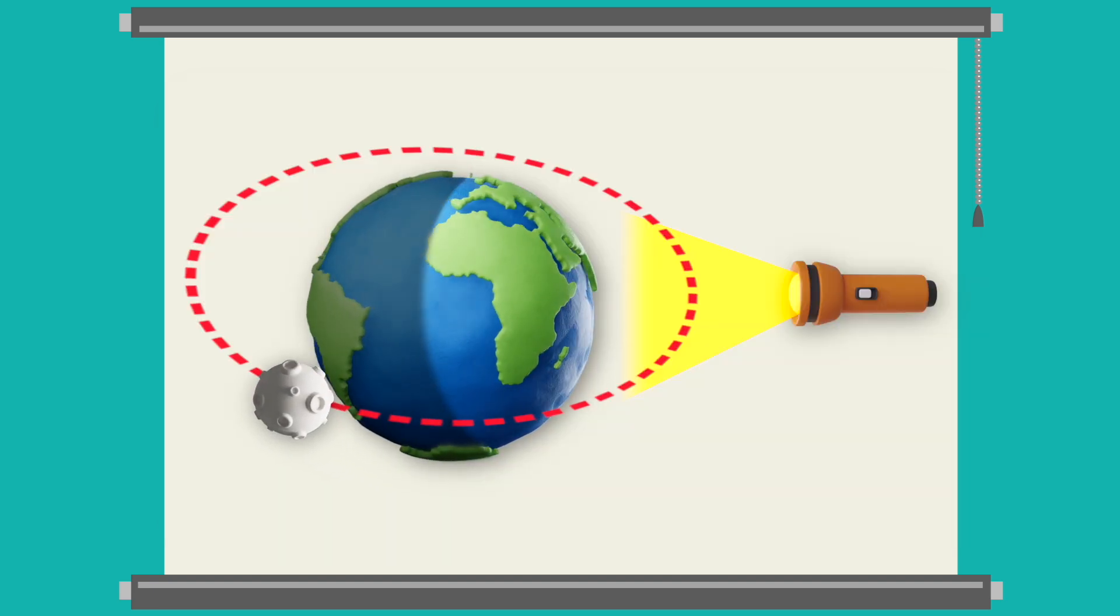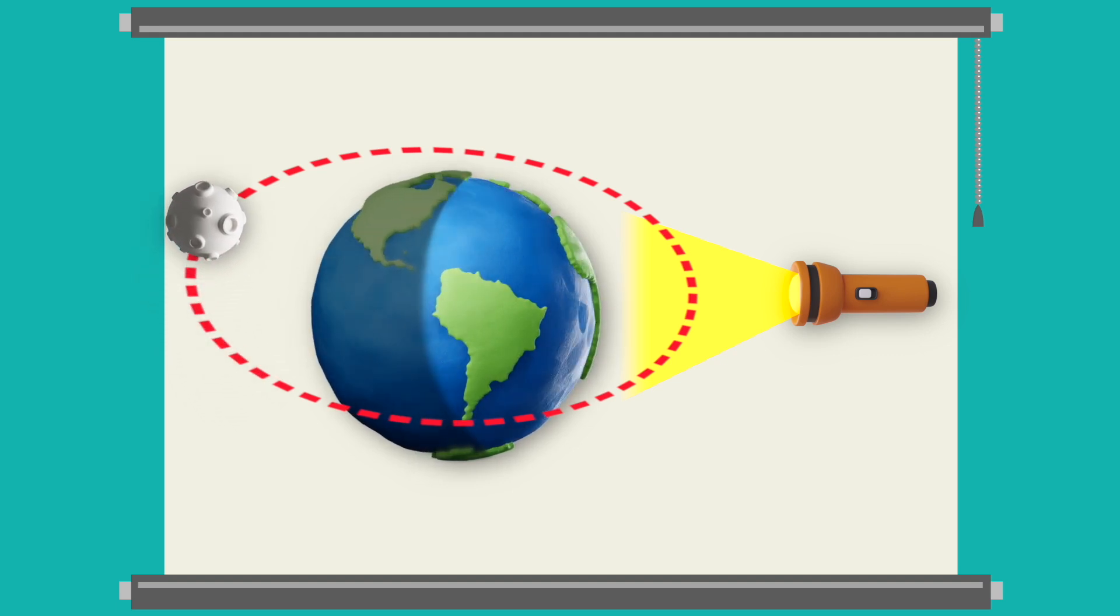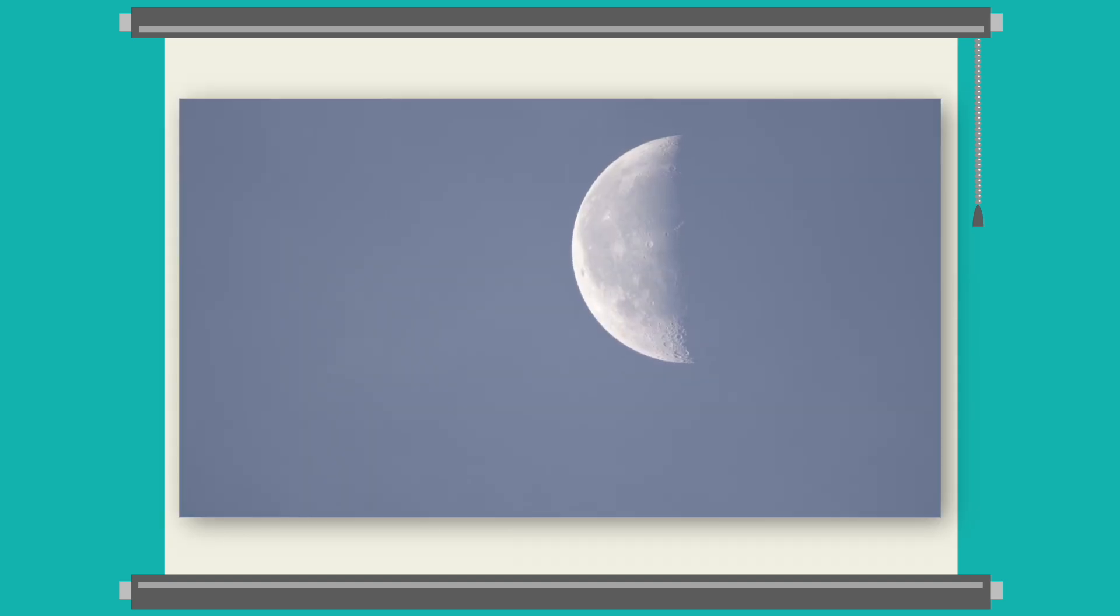The moon slowly moves through its orbit. Say we look out the window when it moves right here, a little behind the earth and the sunlight. This is what we might see.